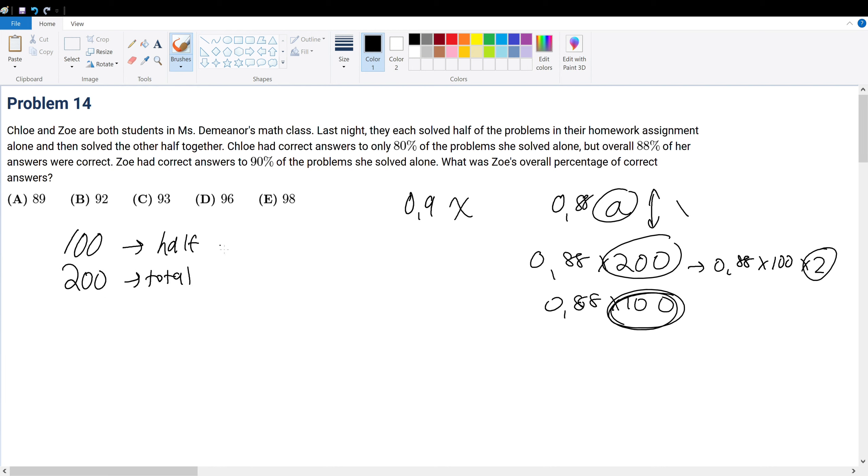100 is half - she solved 80% of the half of the questions by herself, so she solved 80 total questions (0.8 times 100). But overall she had 88% of her answers correct, so 0.88 times 200 equals 88 times 2, which is 176 total correct.